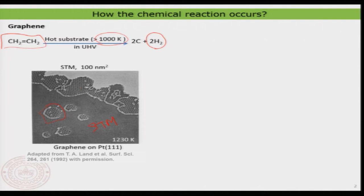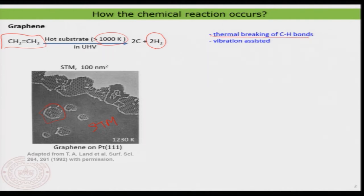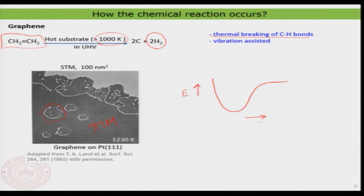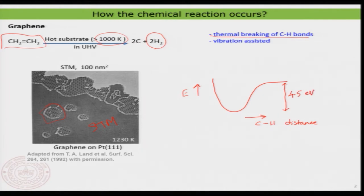Now let us have a look at how we really break this bond and do the chemistry. Although the temperature is there, this is essentially a temperature-induced breaking of the C–H bond. If we look at the potential energy diagram of the dissociation of the C–H bond — plotting potential energy versus C–H distance — the magnitude of energy required to break a C–H bond is in the order of about 4.5 electron volts, or about 100 kilocalories per mole.